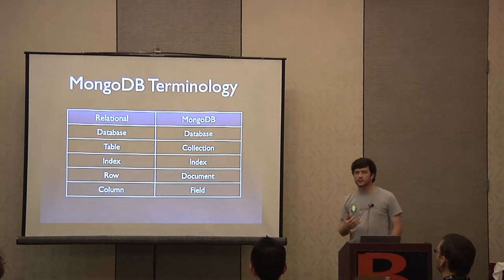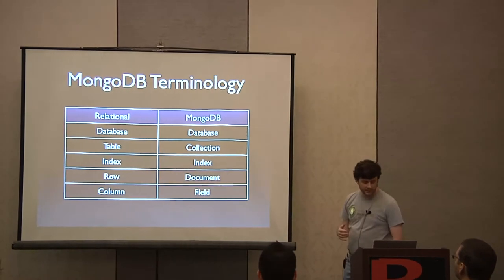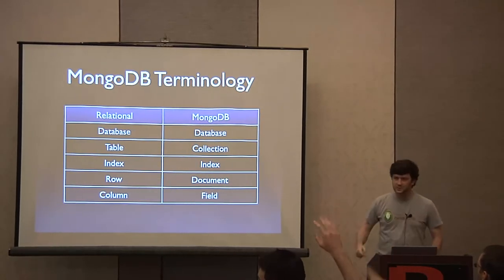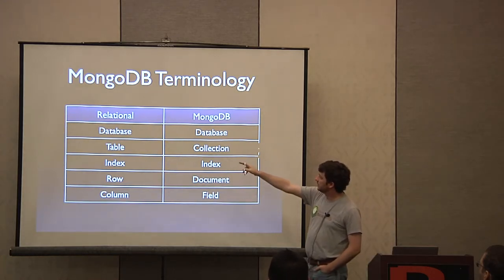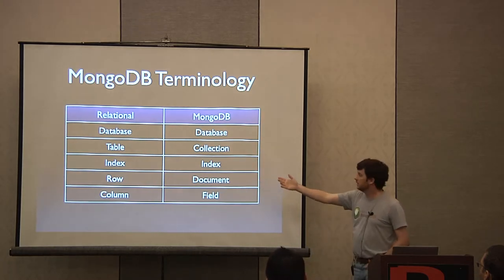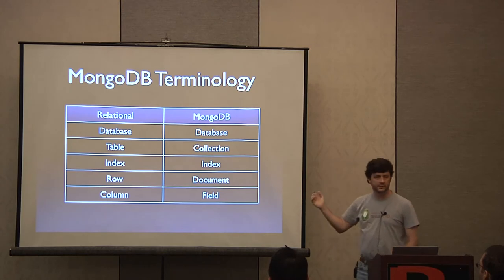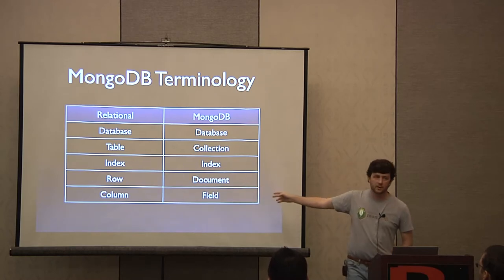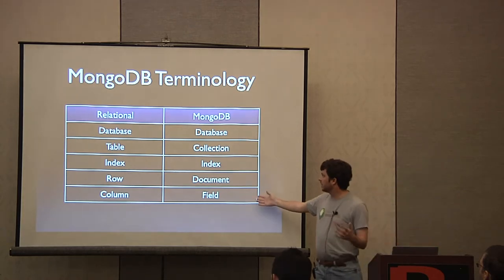Since most people here are not MongoDB experts, I want to do a little terminology mapping. In the relational world, a database is still called a database in MongoDB. A table is called a collection — we'll get into the differences. There are indexes in both serving the same purpose. Rows in a relational database are called documents in MongoDB — not like a Word document, but like a JSON object. And columns are called fields or properties in MongoDB.